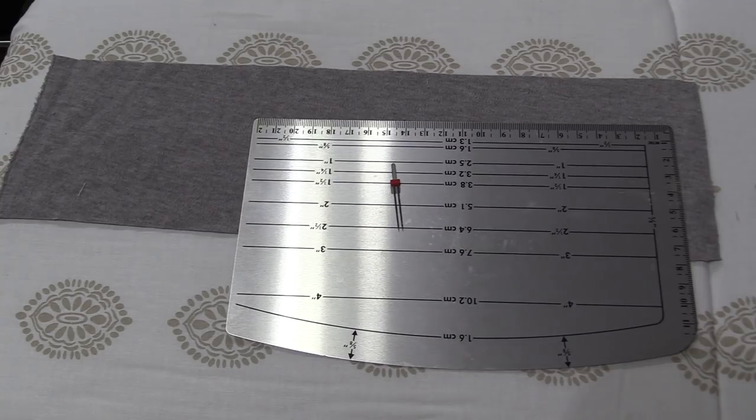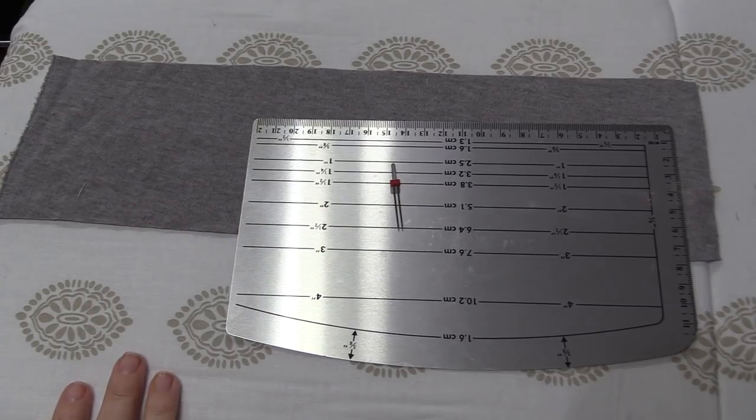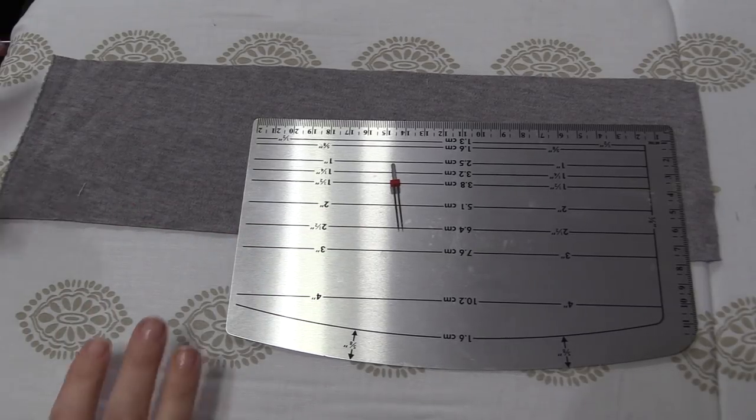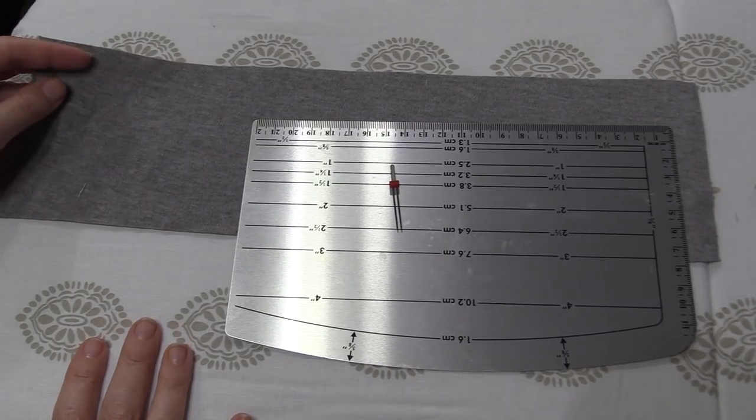I'm going to show you how to hem knit fabric using a twin needle. If you're following along with our tutorial on how to draft and sew a t-shirt, this is the technique that we're going to be using on the bottom of our shirt and on the sleeves.